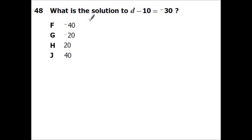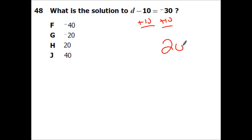What is the solution to D minus 10 equals negative 30? Add 10 to both sides: negative 30 plus 10 — different signs, so subtract. That's 20, but keep the sign of the one with the most: 30 negatives, 10 positives — so D equals negative 20.